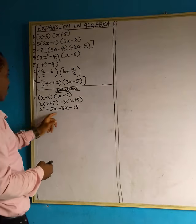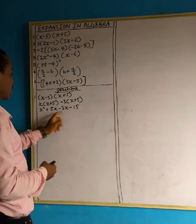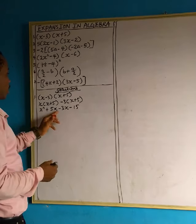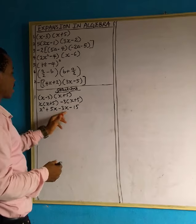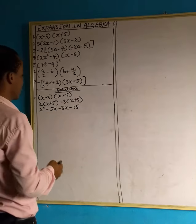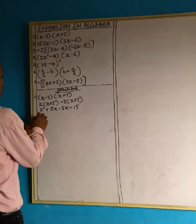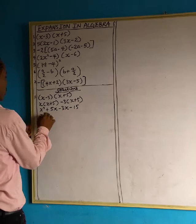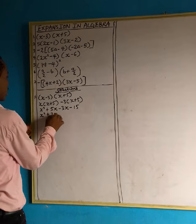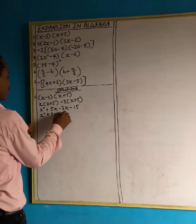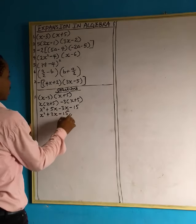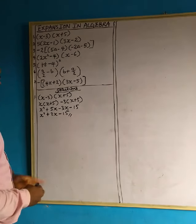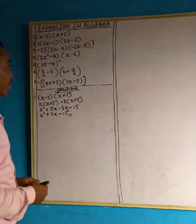Now these are like terms: 5x minus 3x gives us 2x. So we have x squared plus 2x minus 15. So this is the answer to the first one.